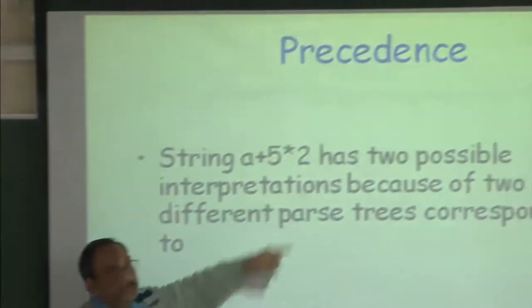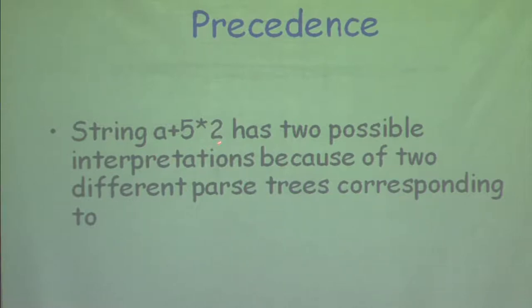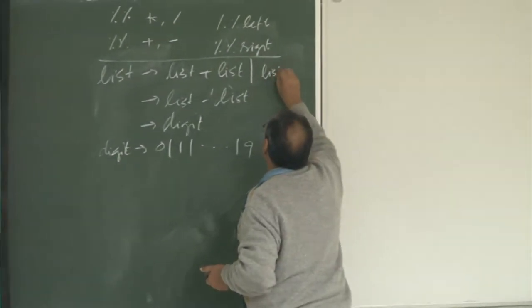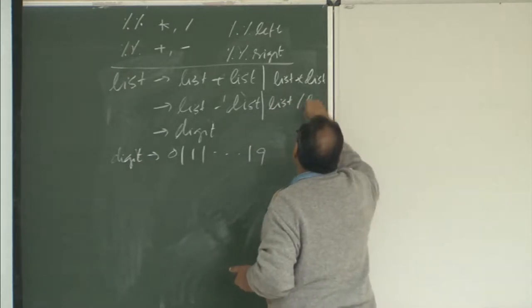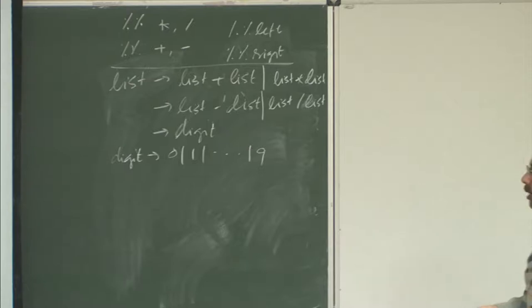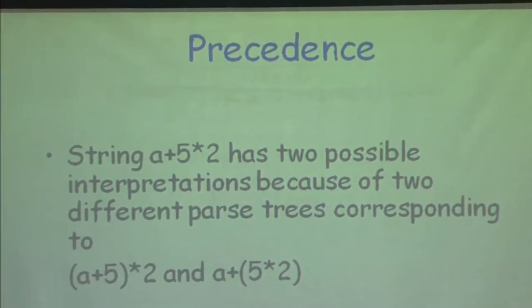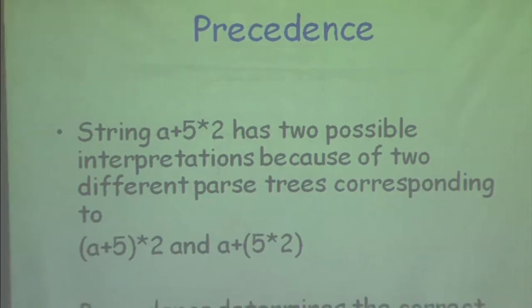Even if I do not put brackets, I know because of arithmetic knowledge what the correct interpretation is. The same thing applies to other constructs. Suppose I enrich my rules by adding list goes to list star list and list goes to list divided by list. If I try to parse a string with both addition and multiplication, I can get multiple interpretations. One interpretation could be incorrect because multiplication takes higher precedence and must be evaluated before addition. So I have to make sure that precedence is captured to give the correct interpretation.